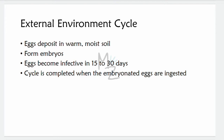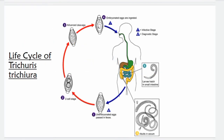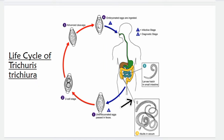These eggs become infective within 15 to 30 days. In the external environment cycle, eggs passed in feces deposit in warm, moist soil, where they form embryos through a two-cell stage and then an advanced cleavage stage. When embryonated eggs are ingested by humans, the cycle is completed. The diagrammatic representation starts with unembryonated eggs passed in feces, progressing through embryonation stages, ingestion by humans, hatching in the small intestine, larval release, migration to the large intestine and colon, maturation into adult worms, and release of unembryonated eggs back into feces.